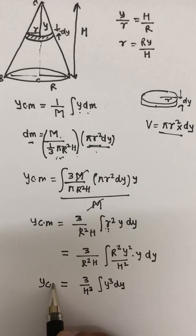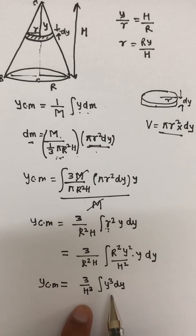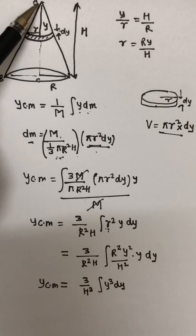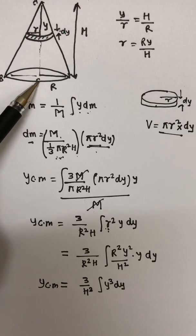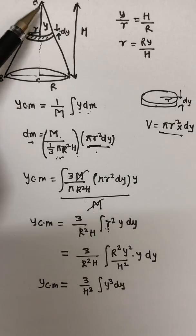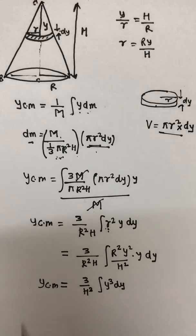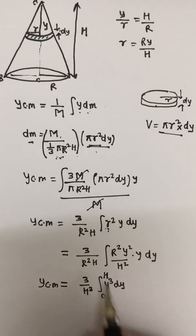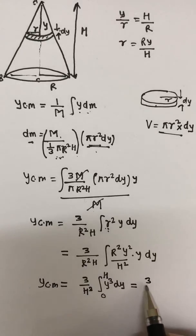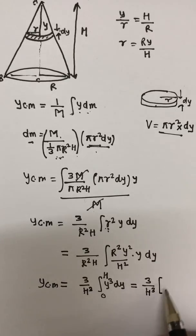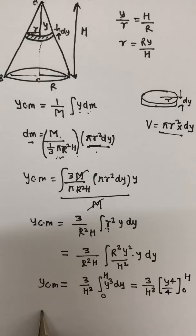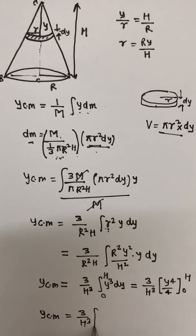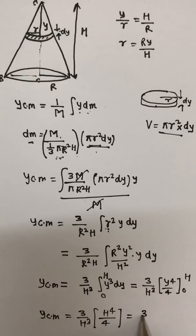The variable is Y, so the limits run from 0 to H: when the element is at the top, Y equals 0; at the bottom, Y equals H. Integrating from 0 to H gives 3 divided by H³ times y⁴/4, evaluated from 0 to H. Substituting the limits gives Y_cm equals 3 divided by H³ times H⁴ divided by 4, which equals 3H over 4.